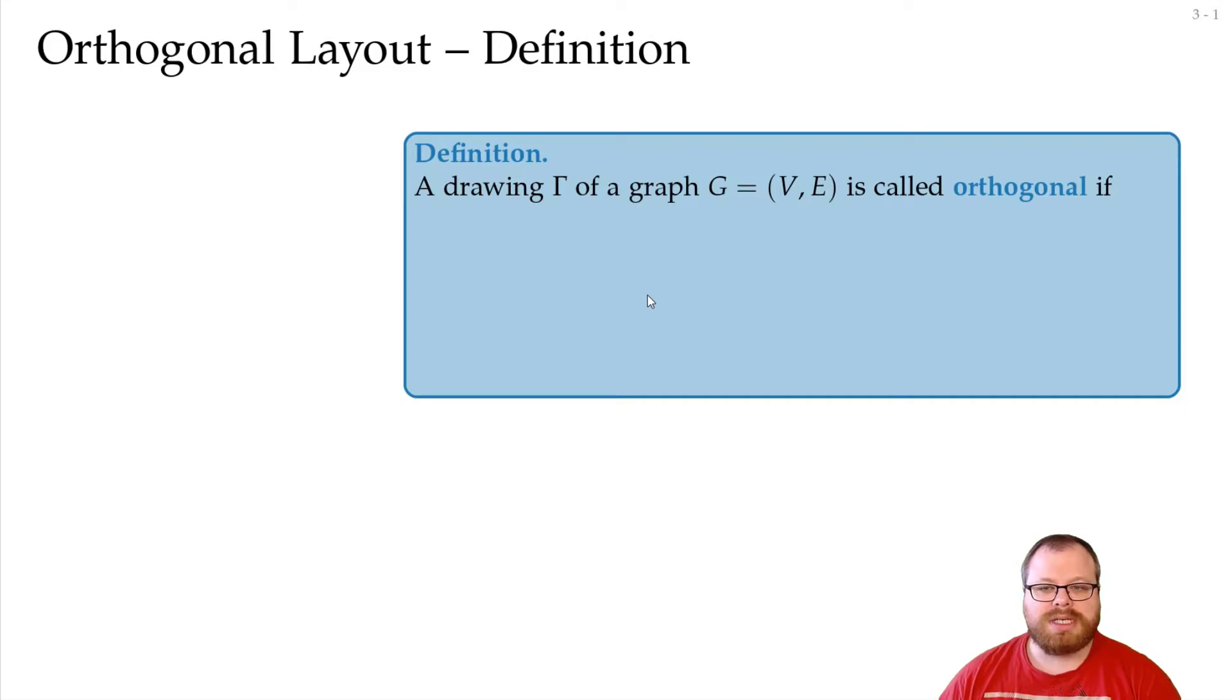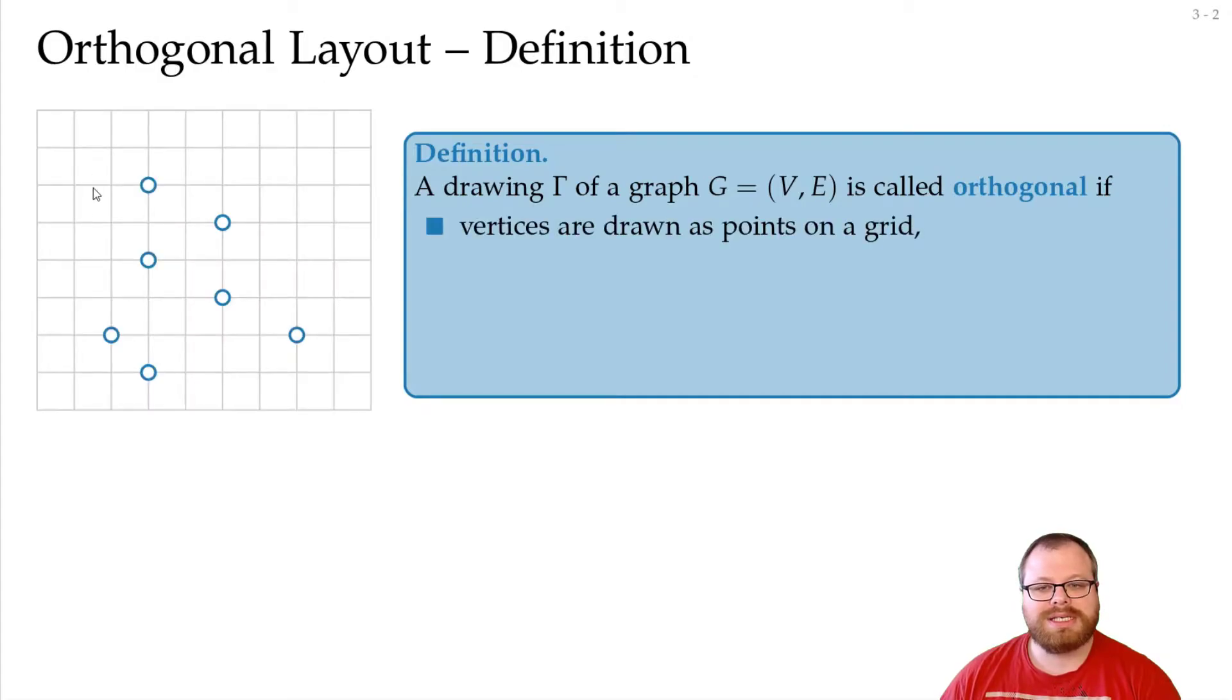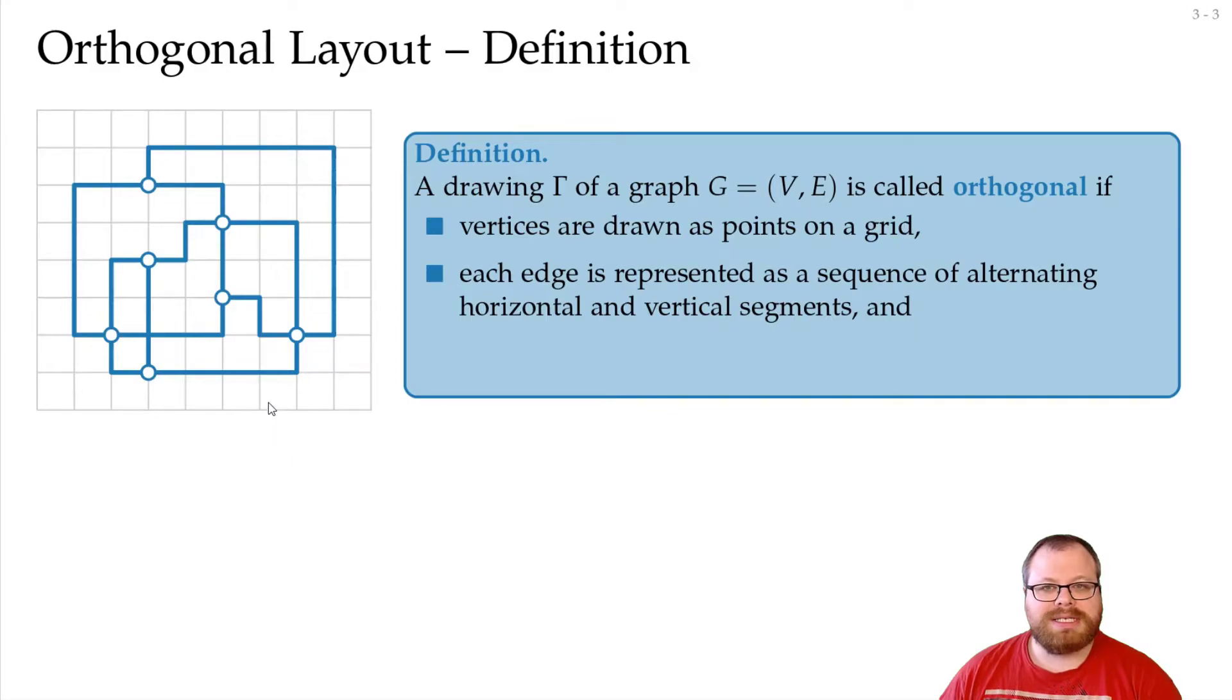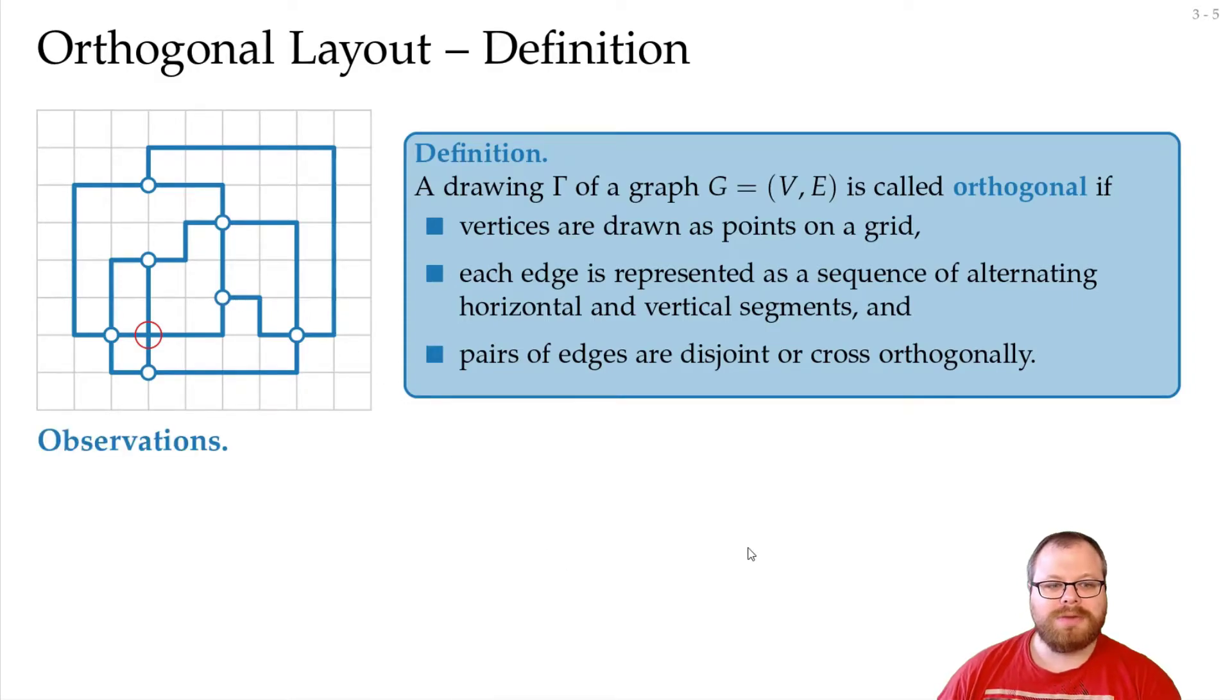We want to define this drawing style. We say that a graph is called orthogonal if the vertices are all drawn as points on a grid, the edges are represented as sequences of alternating horizontal and vertical segments, and pairs of edges are either disjoint or they cross orthogonally like here. There are two observations we can immediately make. Since our edges all have to lie on grid lines, the bends also have to lie on grid points.